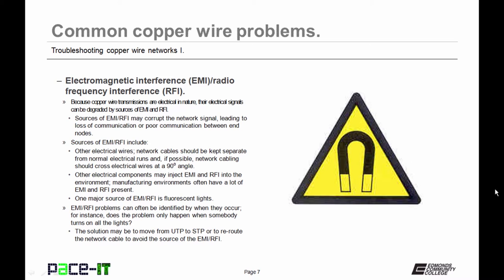EMI and RFI can also be caused by other electrical components. Manufacturing environments often have a lot of EMI and RFI present. Another major source of interference is fluorescent lights. Interference problems can often be identified by when they occur. For instance, does the problem only happen when somebody turns on all the lights? The solution may be to move from UTP to STP or to reroute the network cables to avoid the source of the EMI or RFI.